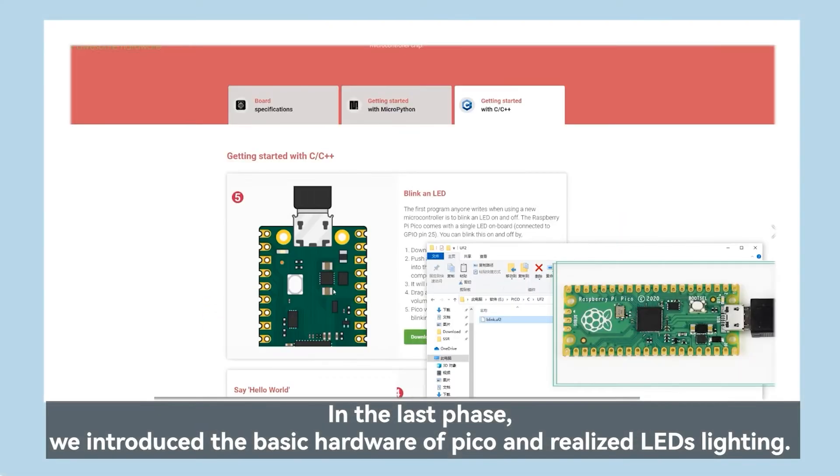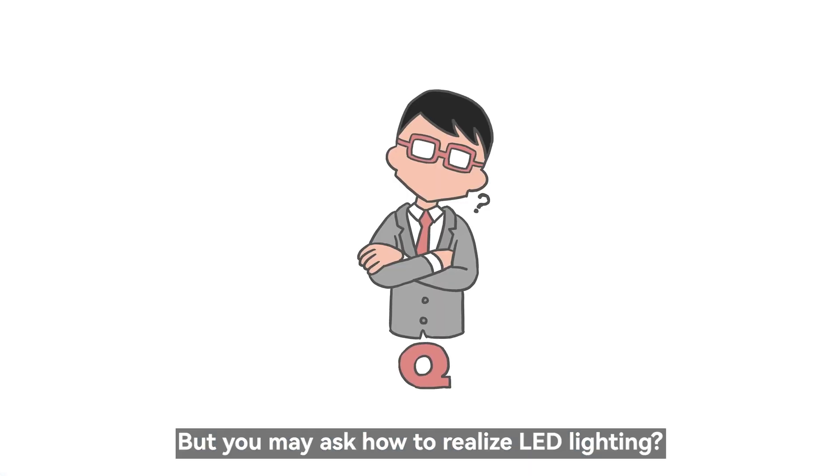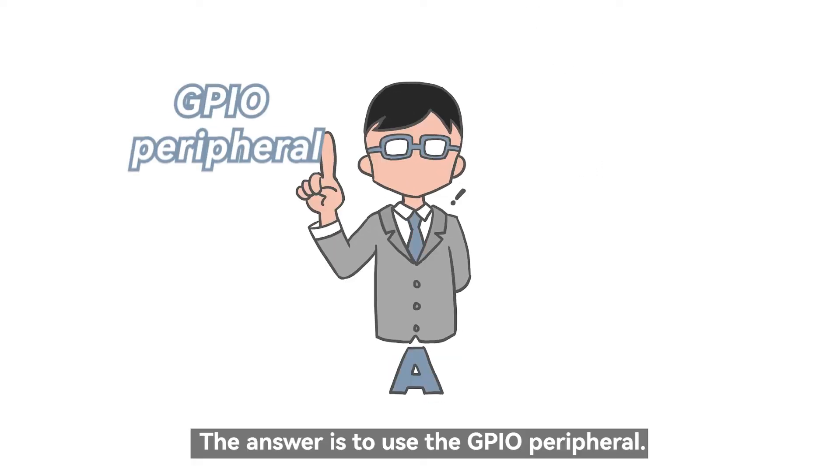In the last phase, we introduced the basic hardware of Pico and realized LED sliding. But you may ask how to realize LED lighting? The answer is to use the GPIO peripheral.